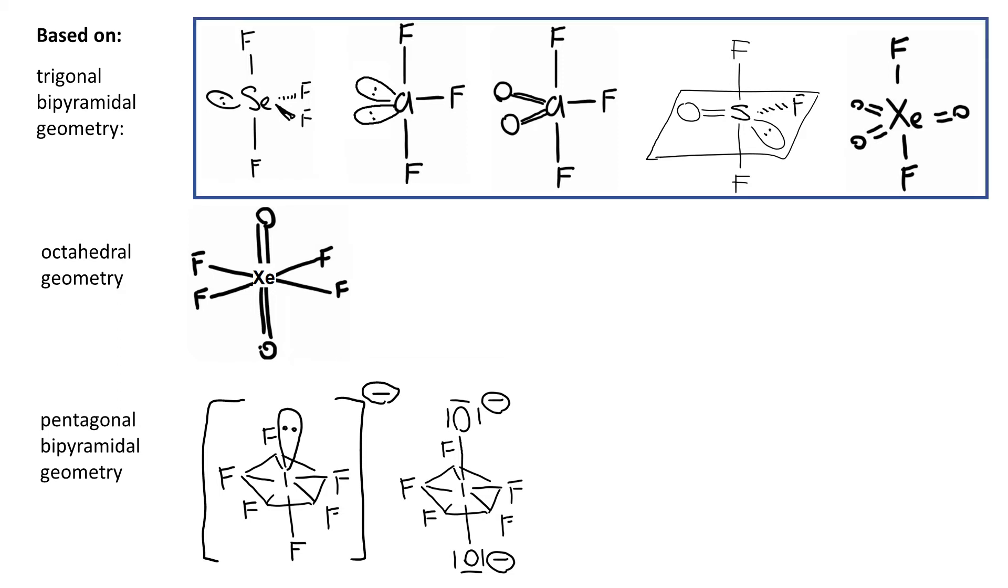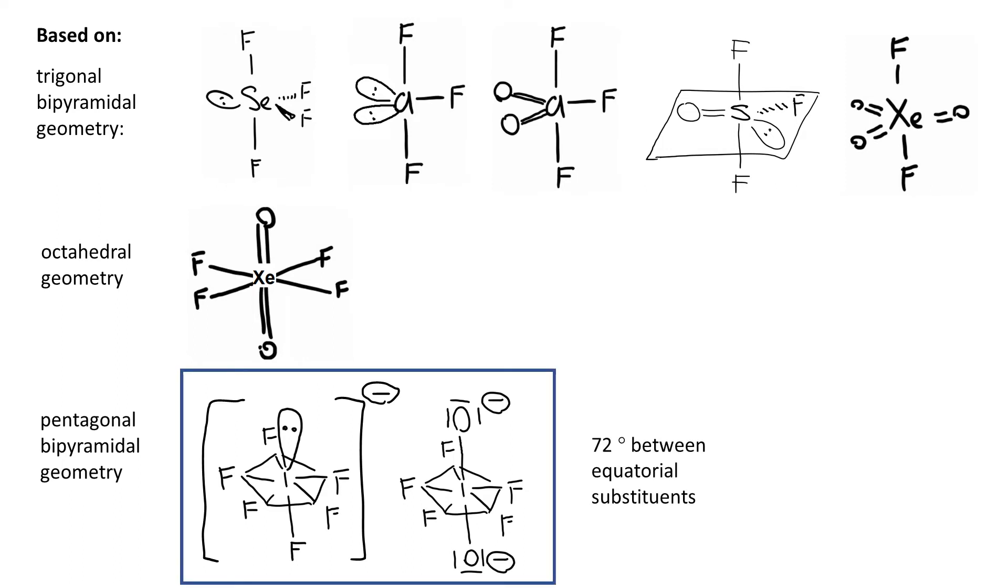So in a trigonal bipyramidal geometry, they prefer to be equatorial. However, for pentagonal bipyramidal geometry, there are 5 ligands equatorial. The angle reduces to 72 degrees and therefore spatially demanding groups will prefer to be axial now.